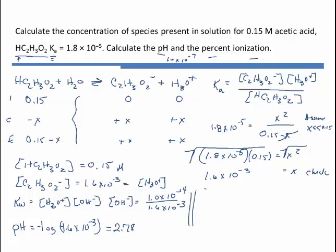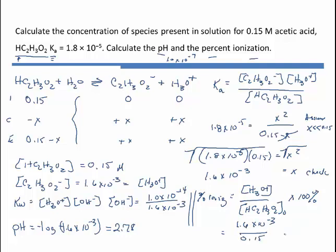The other thing that we're asked to determine is the percent ionization. Percent ionization will be the ionized form. And we can put in the H3O plus concentration divided by the initial acid concentration times 100. And this will give me a percent ionization of 1.6 times 10 to the minus 3 divided by 0.15 times 100, which will give us 1.1%.